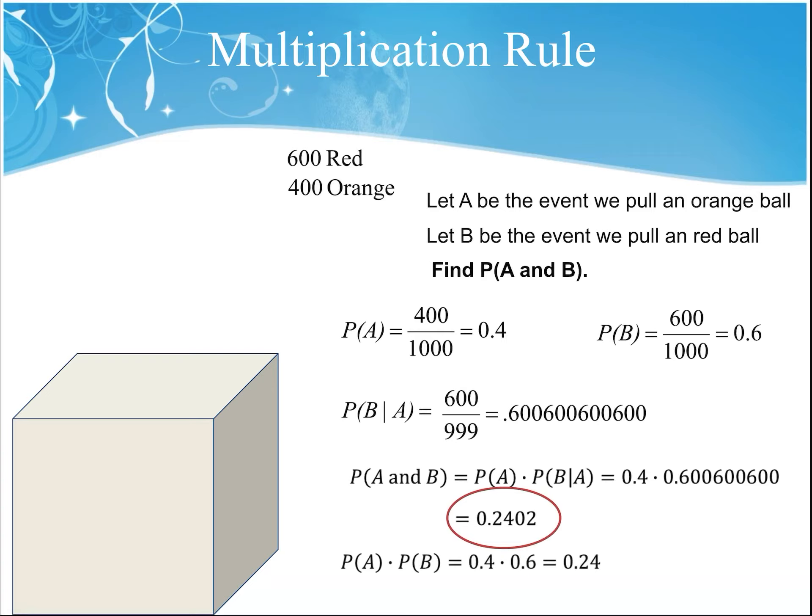Now if we had to find the probability of the two events occurring with replacement — where we put the ball back in — that would be the probability of pulling out an orange ball, 400 over 1,000 or 0.4, times the probability of pulling out a red ball, 600 over 1,000 or 0.6, because we put the ball back in. So the probability with replacement would be 0.4 times 0.6, which equals 0.24.